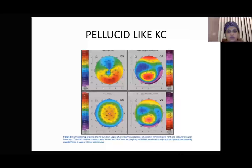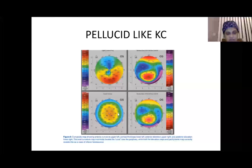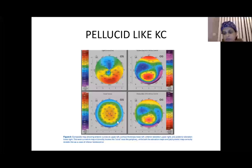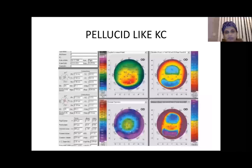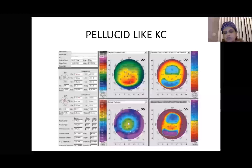In pellucid-like keratoconus, the anterior sagittal curvature map shows a crab-claw appearance with inferior elevation on both anterior and posterior elevation maps, but on the pachymetry map there is no bell sign and the thinning is well within the paracentral area — not inferior as in true pellucid. Another Pentacam example shows the crab-claw pattern but with central thinning.